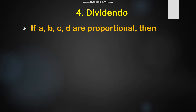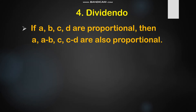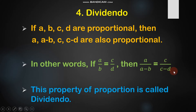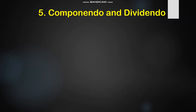The fourth property is dividendo. If A, B, C, D are proportional, then A, A minus B, C, C minus D are also proportional. In other words, if A ratio B is proportional to C ratio D, then A ratio A minus B is proportional to C ratio C minus D. Here, the denominator is subtracted from the numerator. This property is called the dividendo property.